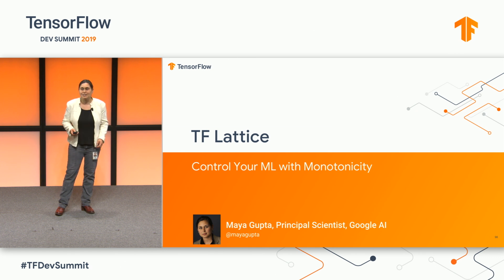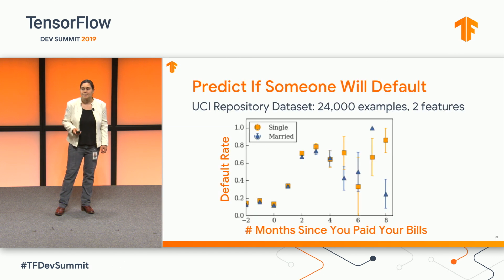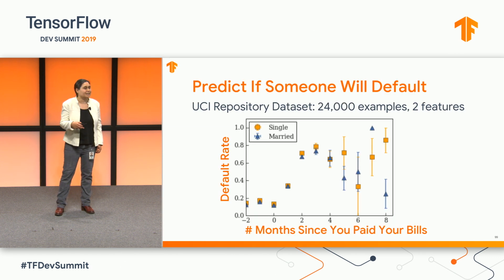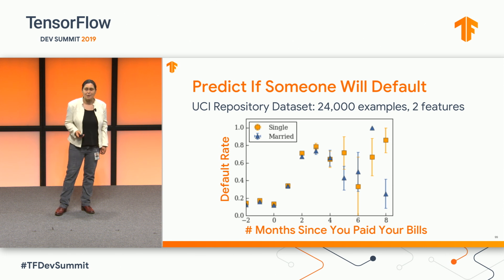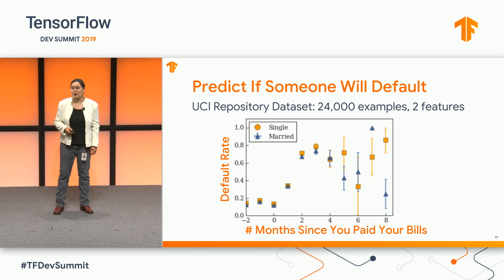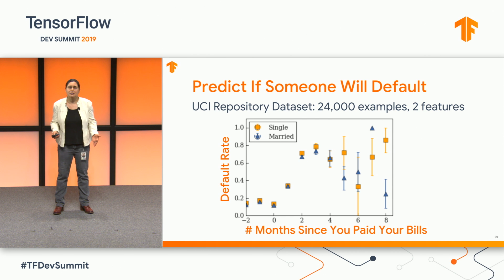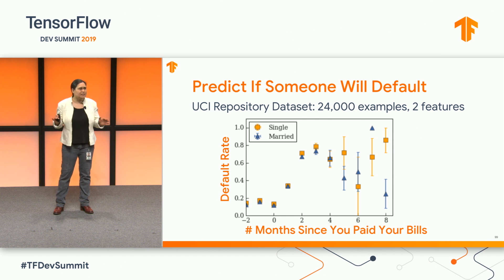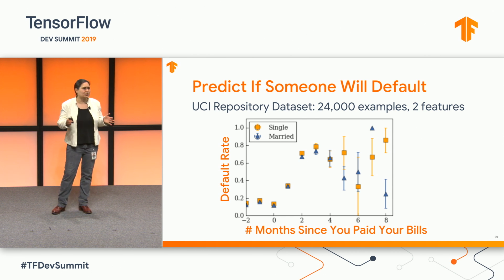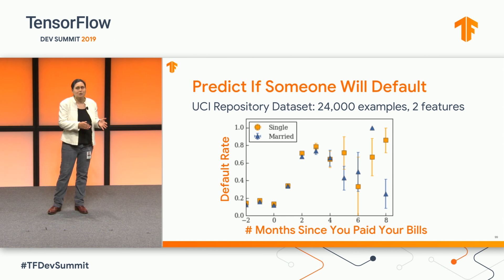Let me dive into an example. The example I'm going to use here is a benchmark dataset from UCI, so you could play with this at home. We have plenty of data here — 24,000 training examples. There are more features in the dataset, but we're just going to look at two so that we can visualize what's happening.